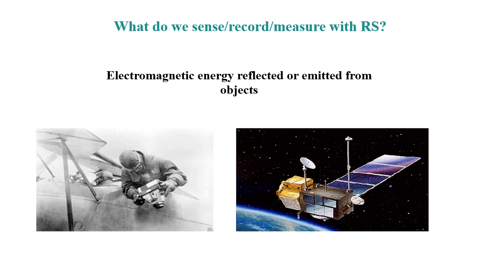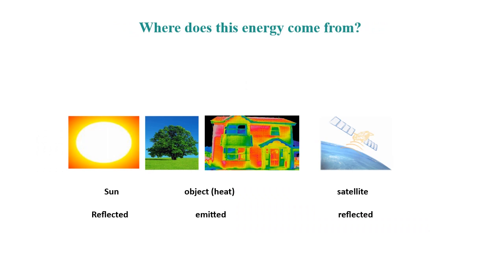The first thing is: what do we sense, record, or measure with remote sensing? We study the electromagnetic energy reflected or emitted from objects. There are three different cases: in most cases, the sun emits the energy and the surface of the Earth reflects it to our sensor. But in some cases, the object itself emits energy through its heat, and in others, the satellite emits the energy and detects it reflecting back.